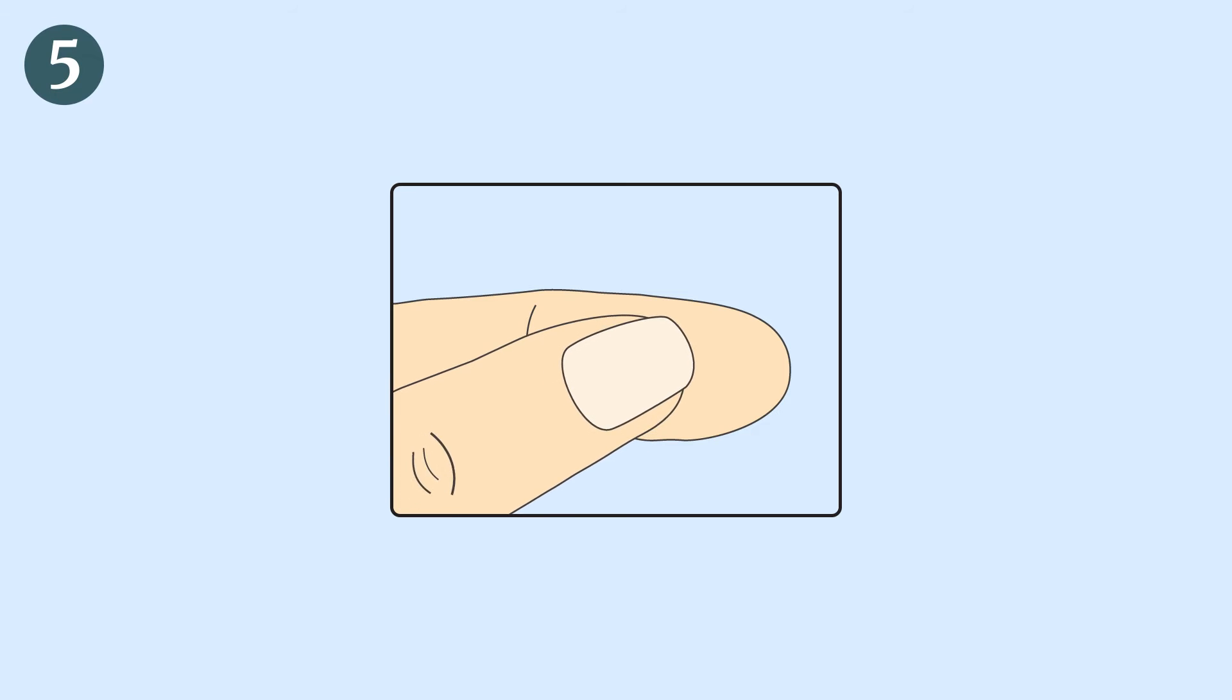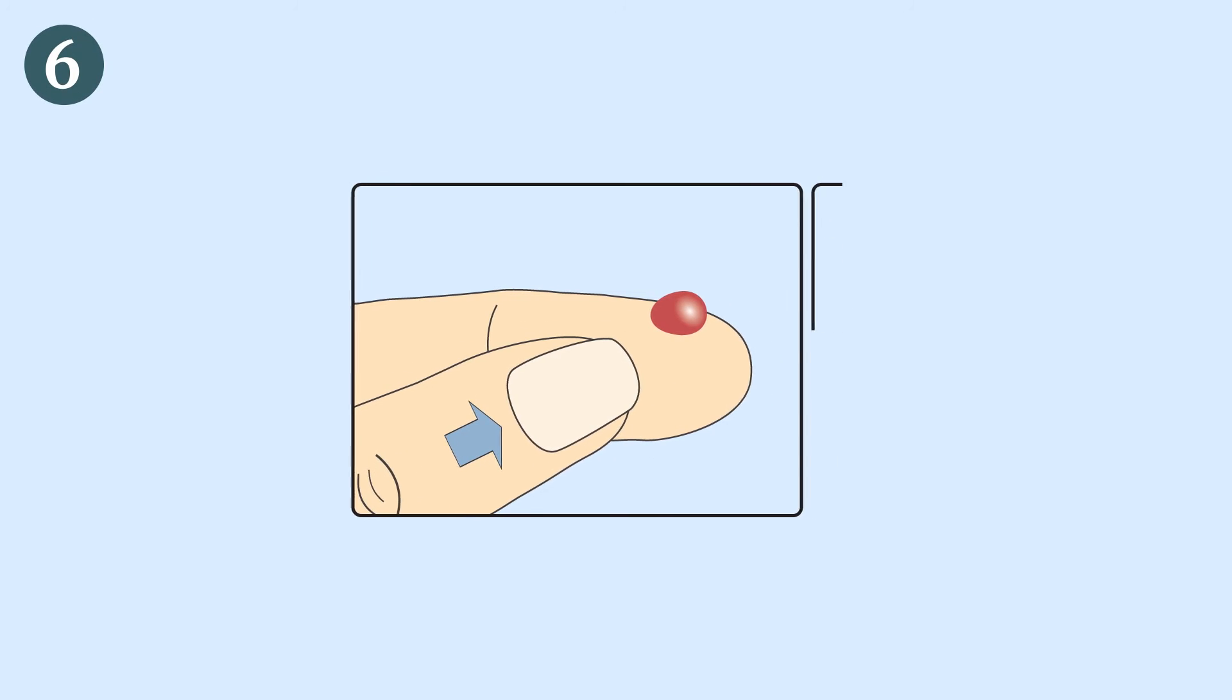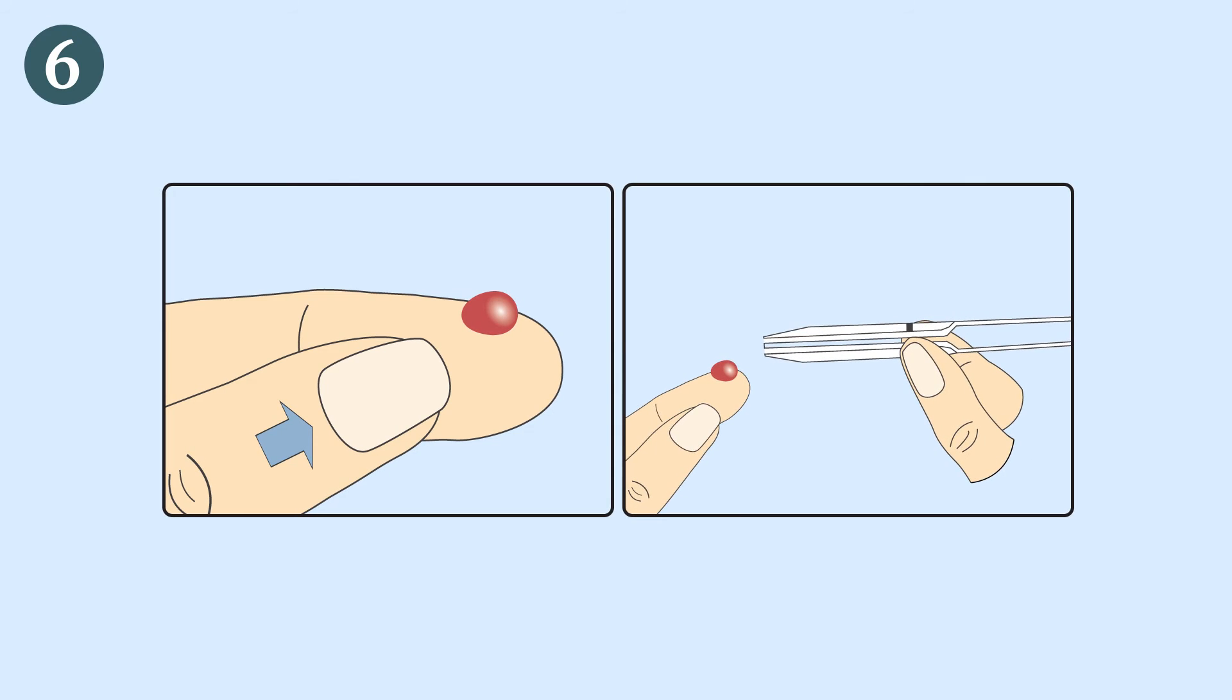Rub the finger to obtain enough whole blood sample. Without pressing the bulb, put the plastic pipette in contact with the blood sample. The blood migrates into the pipette through capillarity to the line on the pipette. You may rub your finger again to obtain more blood sample if the line is not reached.